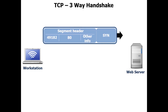After you type in the URL into your web browser — trainsignal.com — and press enter, your computer is going to send information from the application layer down to the transport layer. The transport layer is going to create a segment called a SYN, and the SYN is going to ask to build this session with the web server. We send it out on a destination port of our web server port, which is port 80.